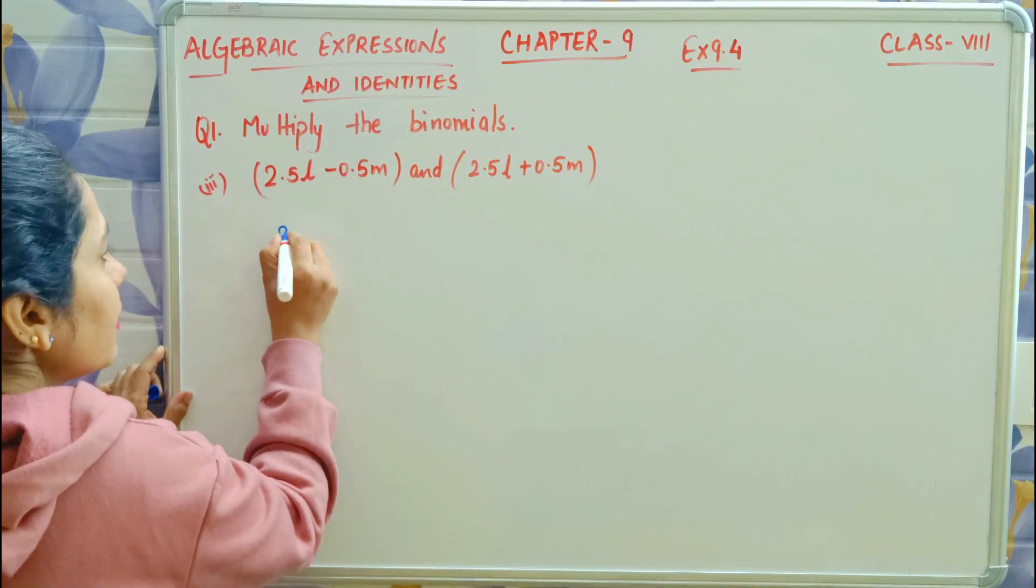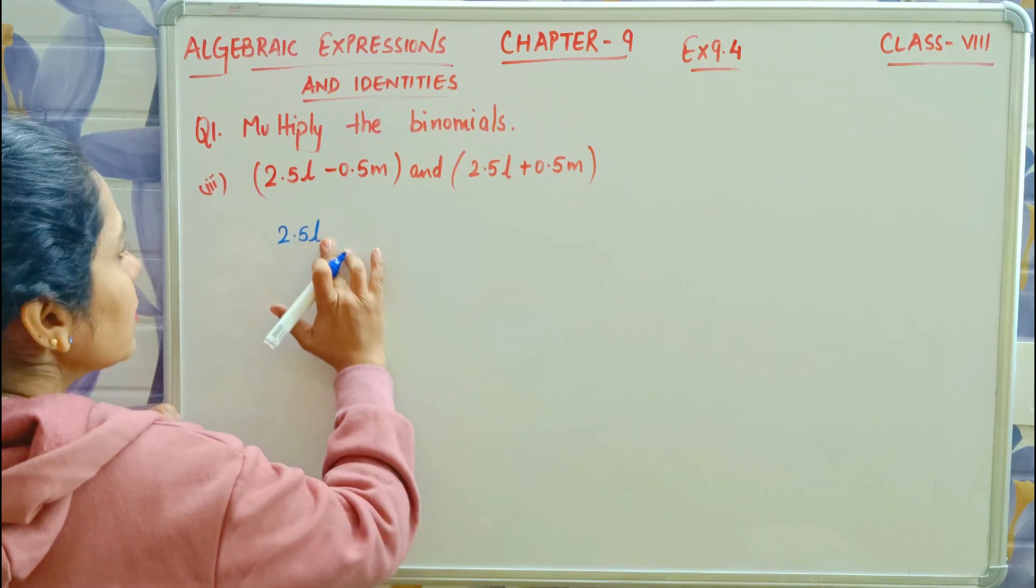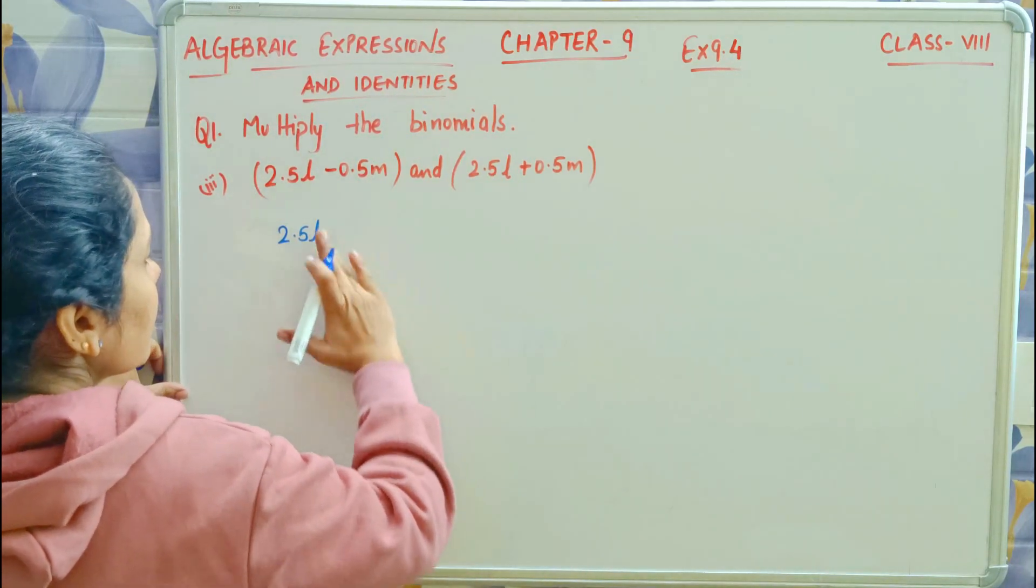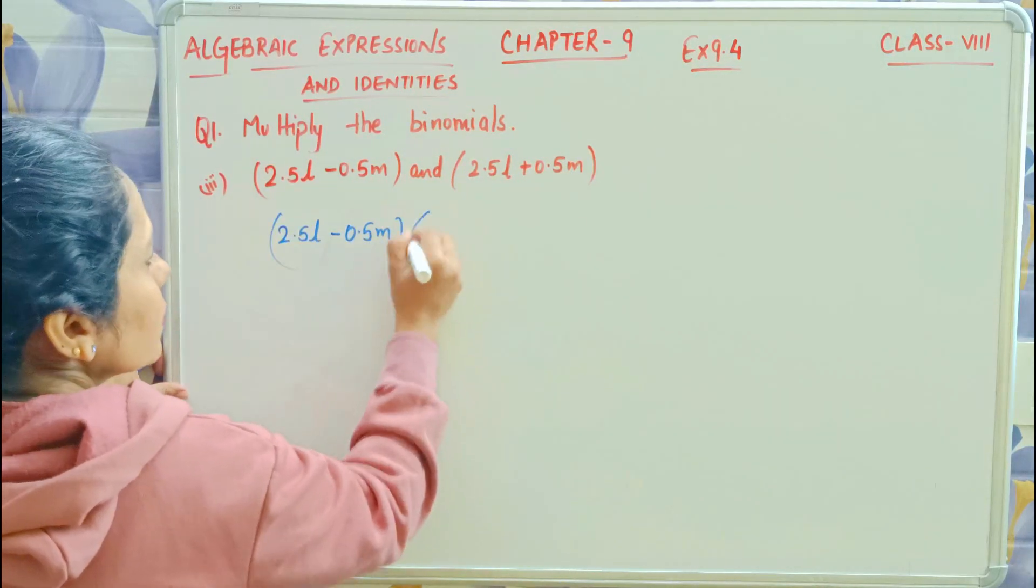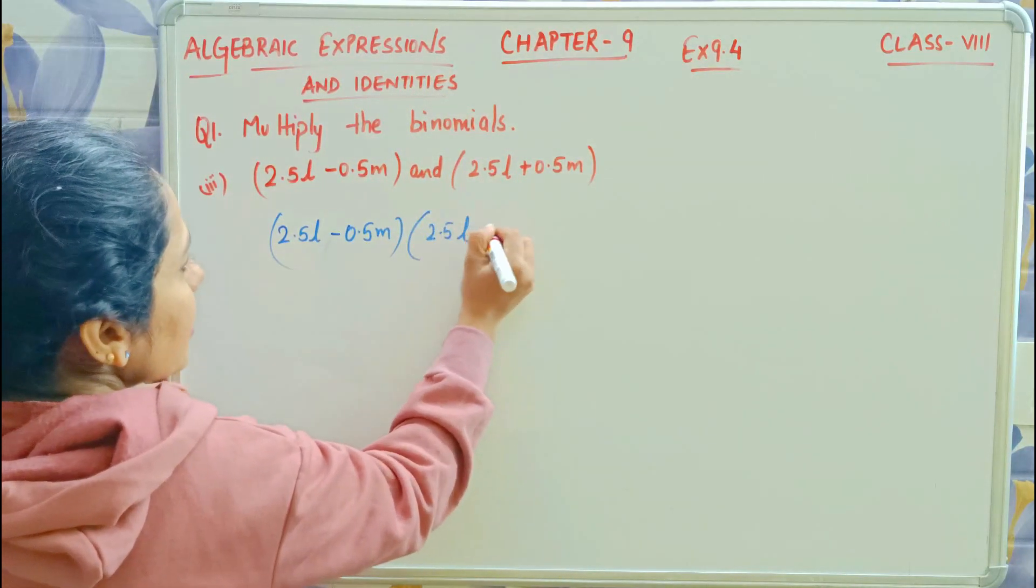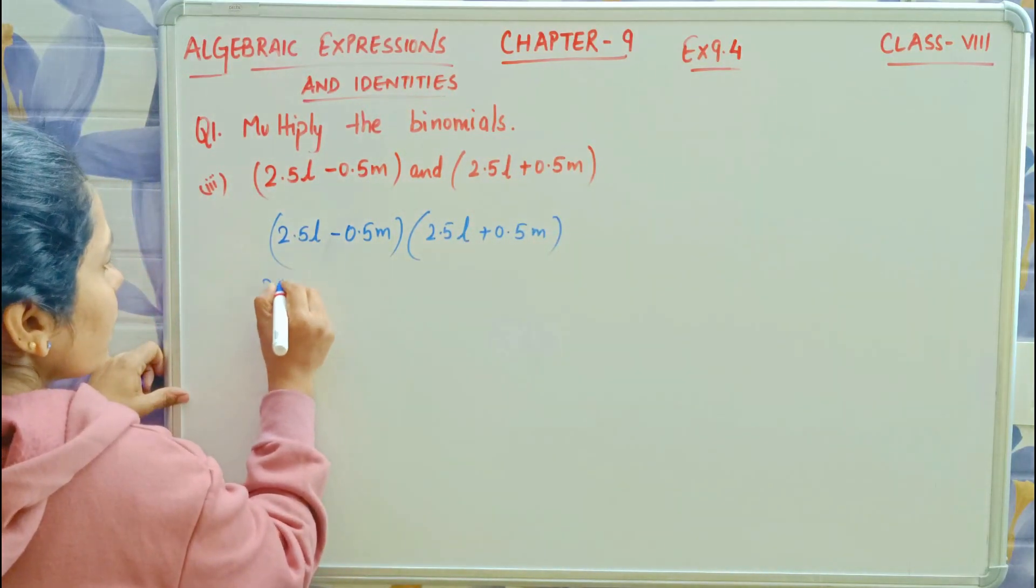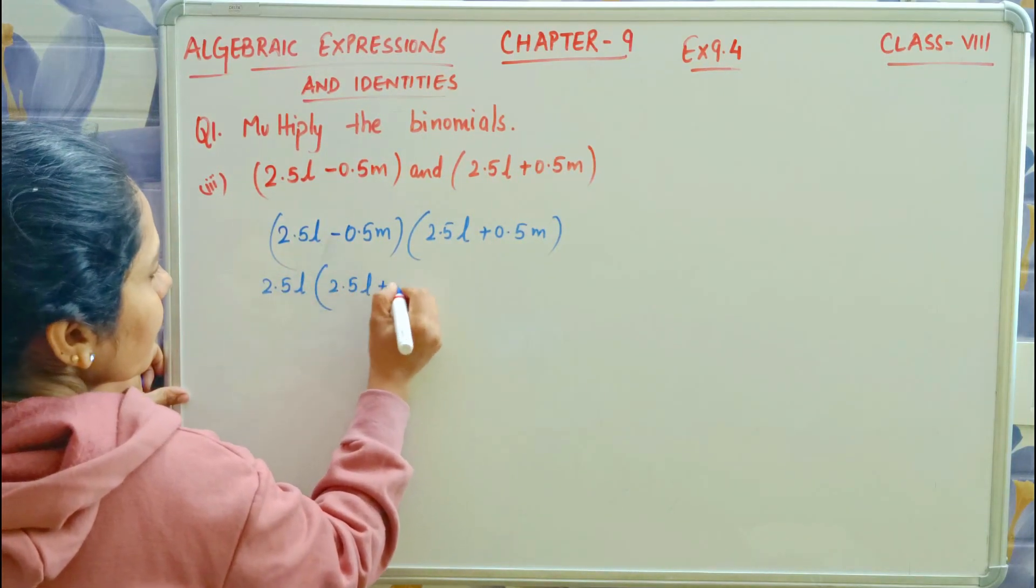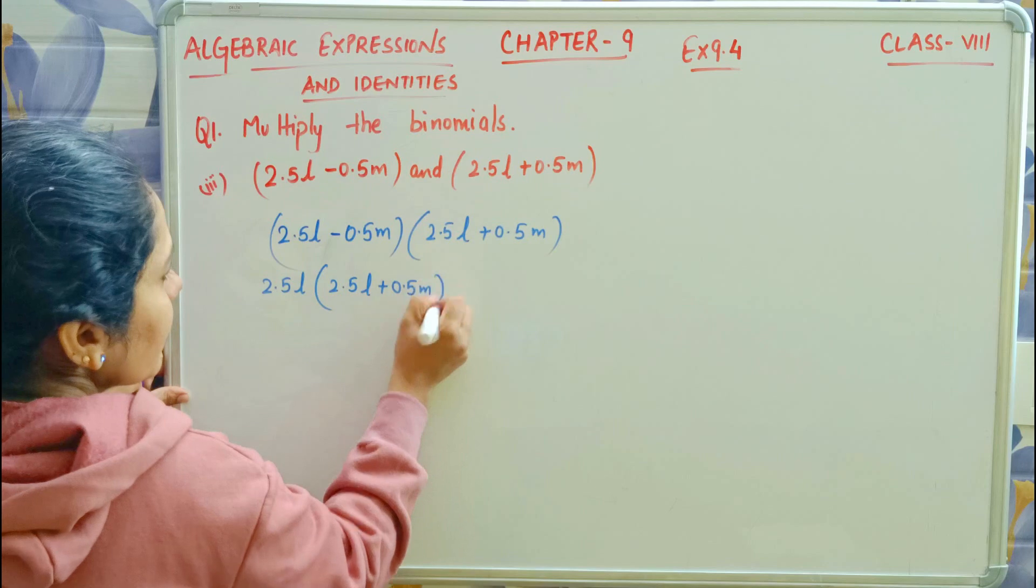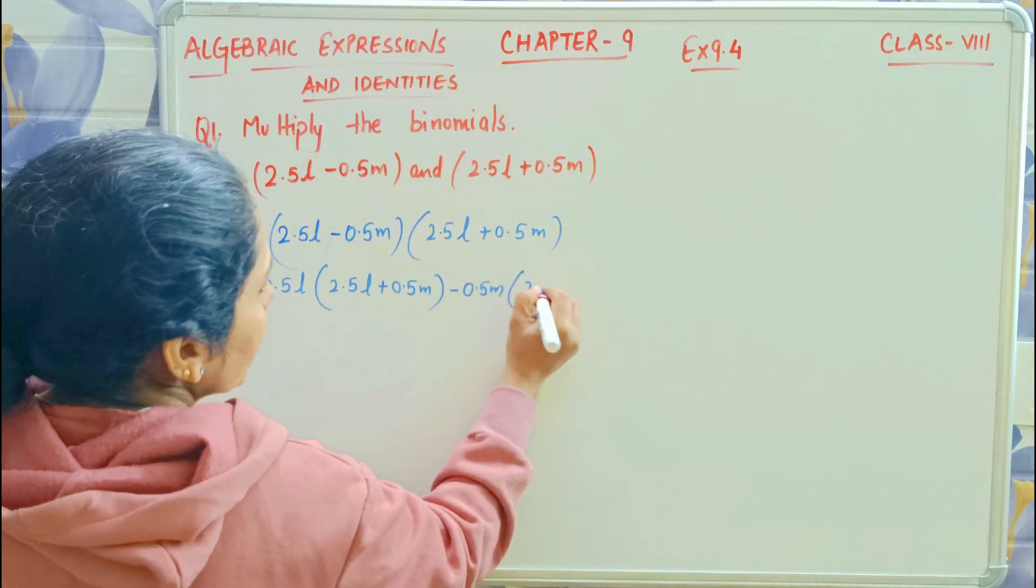2.5L minus 0.5M, then 2.5L plus 0.5M. Now write the same: 2.5L in bracket with this whole thing, then minus 0.5M, bring this and this again.